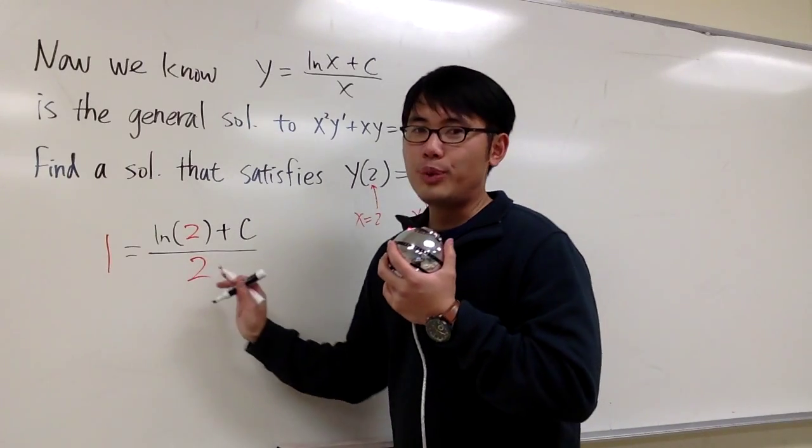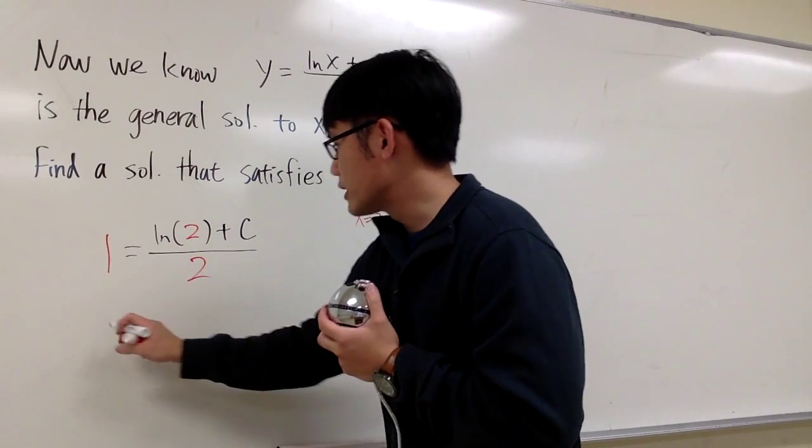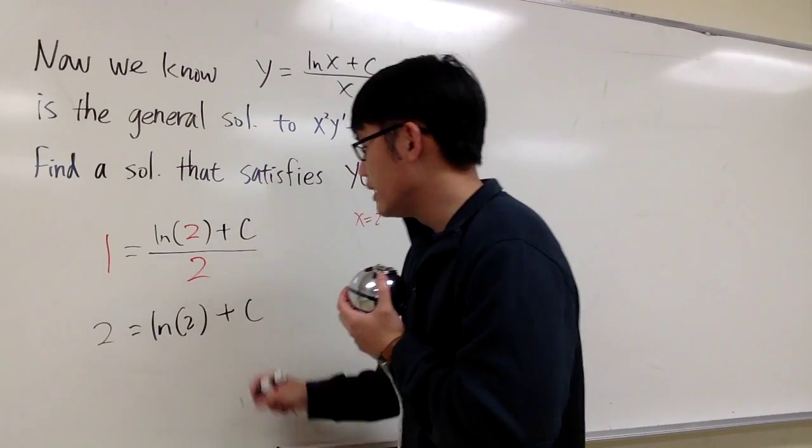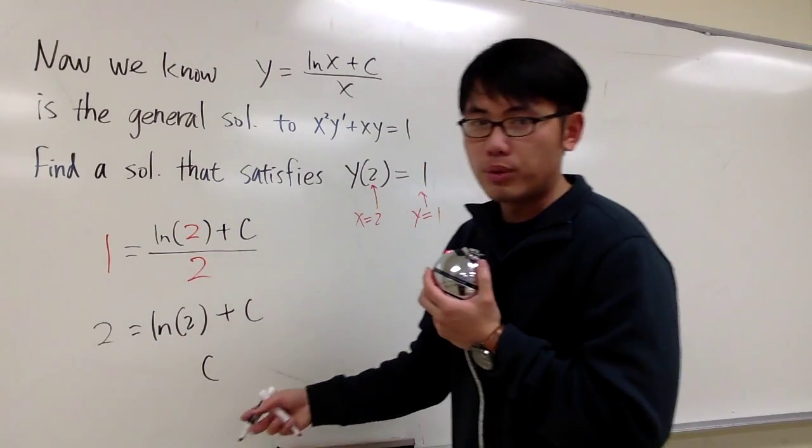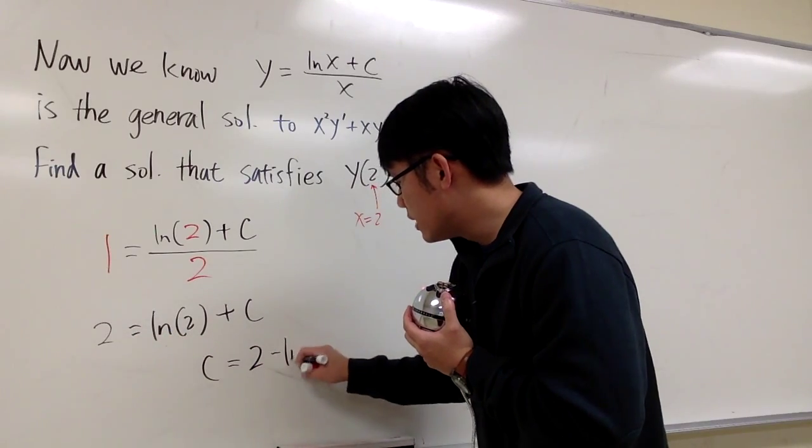And now this is just an algebraic equation, we just have to solve for c, and that's it. So we can multiply both sides by 2, so we get 2 is equal to ln2 plus c, and then we subtract ln2 on both sides, and c will be 2 minus ln2.